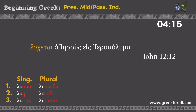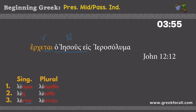Another example with the same word: 'erchetai ho Iēsous eis Hierosoluma.' So 'ho Iēsous' is our subject — it's in the nominative case. This is our verb, and we can see it's third person singular. The number matches our subject, which is very important. So: 'Jesus comes into Jerusalem.'